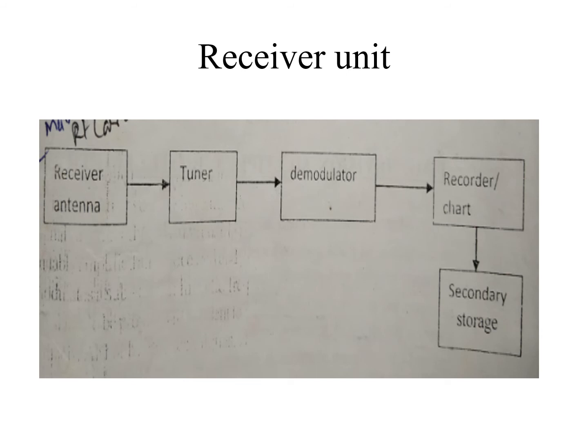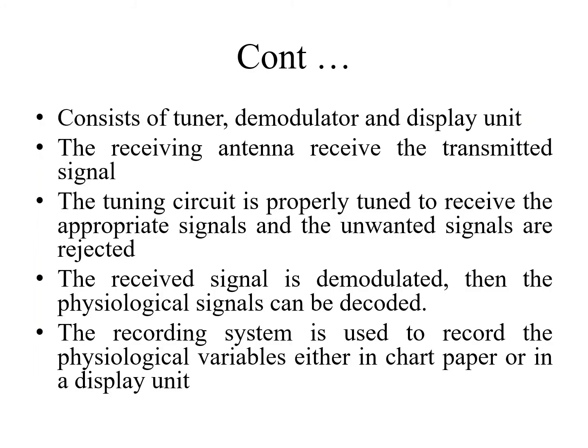This is the receiver unit. It consists of a receiver antenna, a tuner, a demodulator, a recorder or chart, and a secondary storage. It also includes a display unit. The receiving antenna receives the transmitted signal, and the tuning circuit is properly tuned to receive the appropriate signals.